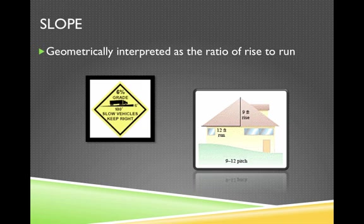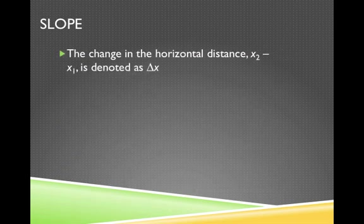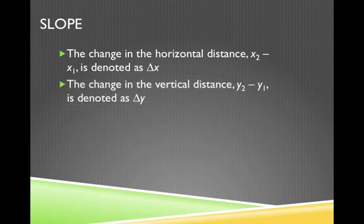Slope is also geometrically interpreted as the ratio of rise to run — rise being the change in y, and run being the change in x. The change in the horizontal distance — the difference between x2 and x1 — is often denoted as delta x, which is read "change of x." Those of you going on into business calculus will certainly see delta x a lot. Similarly, the change in the vertical distance, y2 minus y1, is denoted as delta y, or change in y.